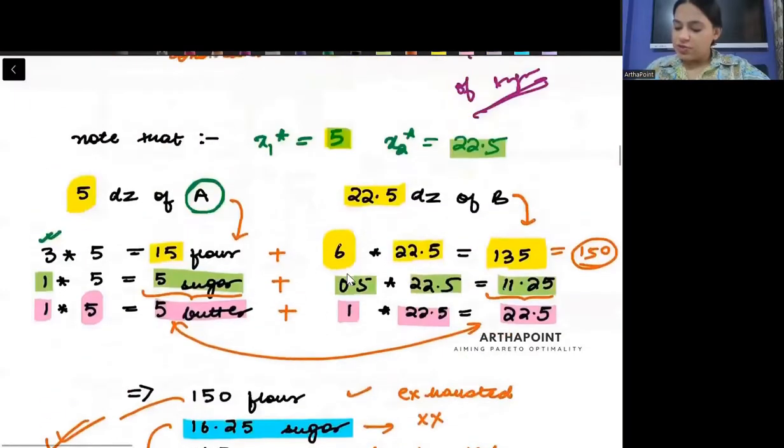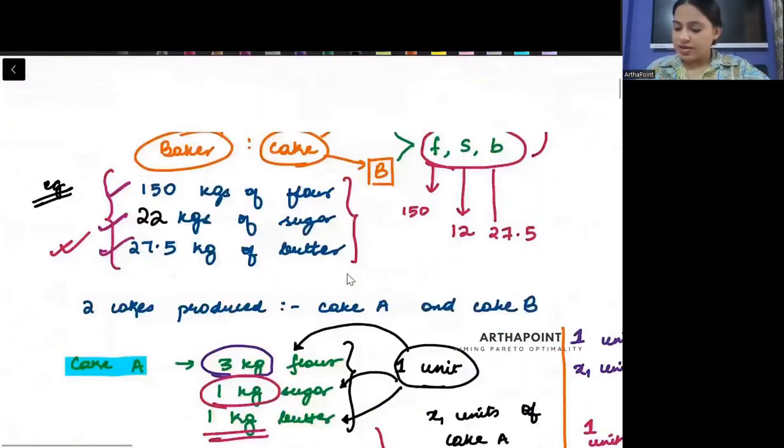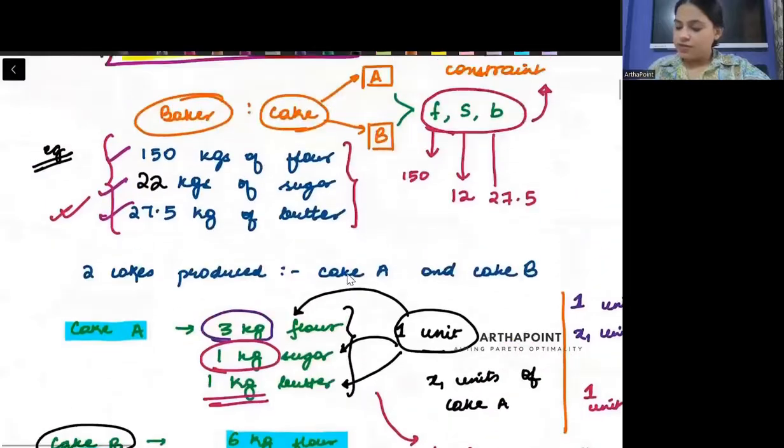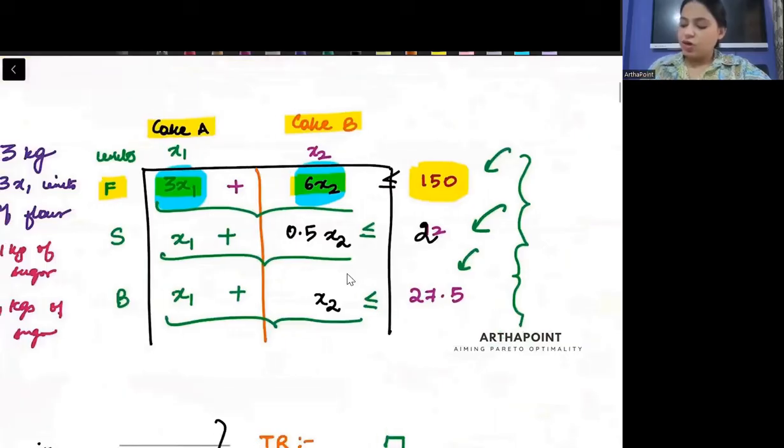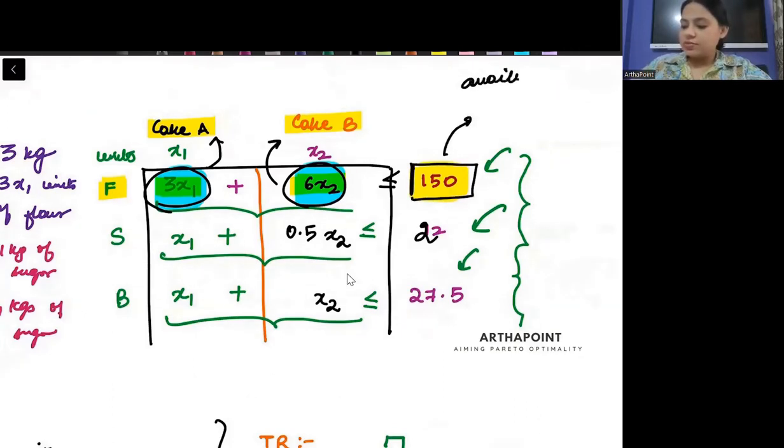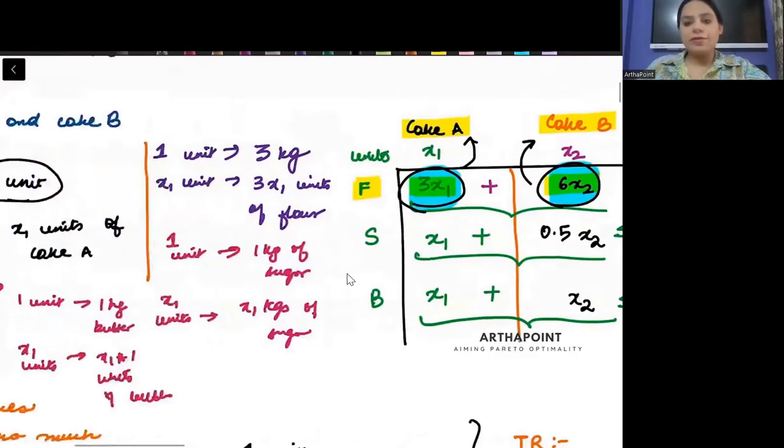You remember here when I was making this table, just come back here. When we talked about these tables, then here I had written that, you know, whatever flour you use for cake A plus whatever flour you use for cake B, the total must be less than equal to 150. This was the availability of flour which was subject to 150. It was restricted to 150 kgs.